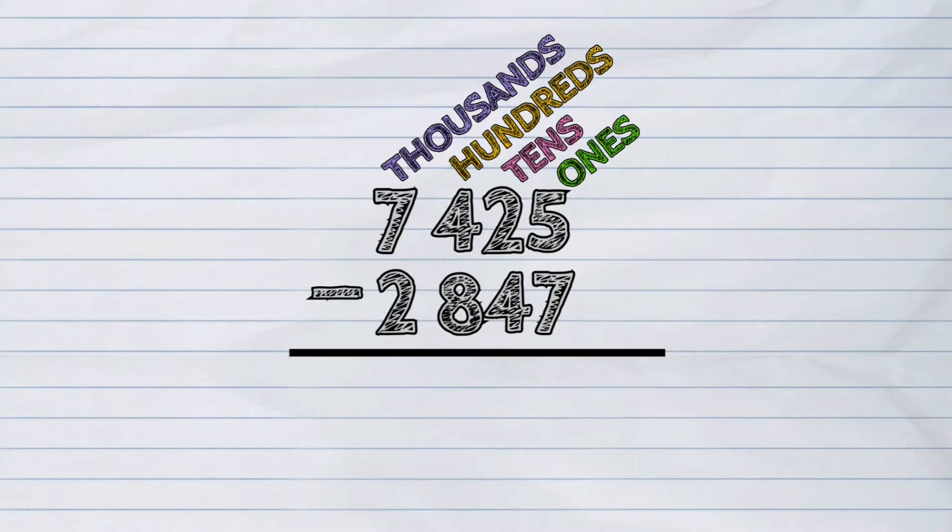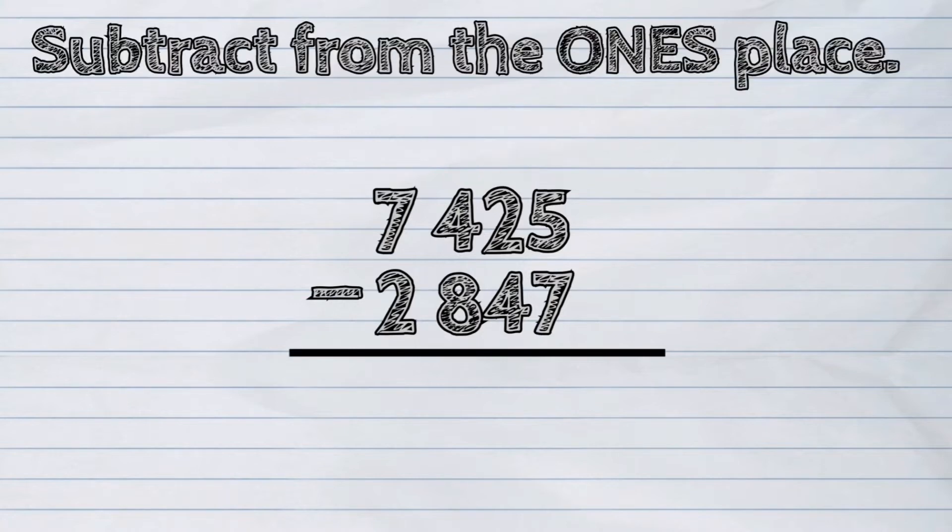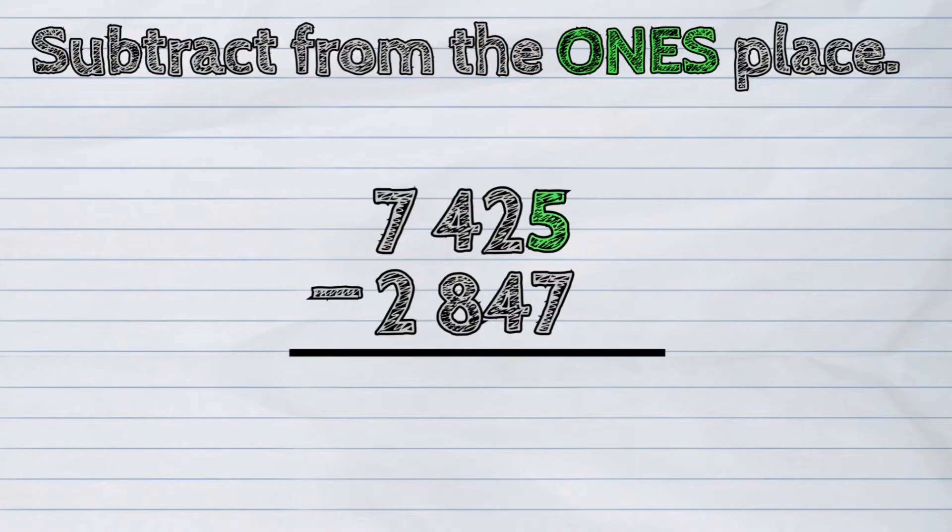Let's now start subtracting from the ones place. Five minus seven. As you can see, the minuend is smaller than the subtrahend. That is where regrouping or borrowing comes in.